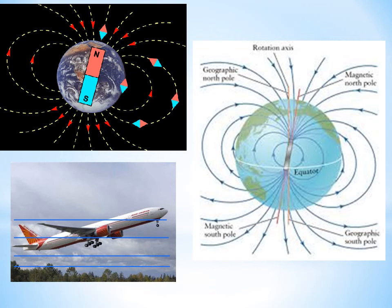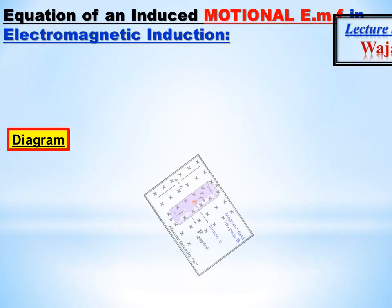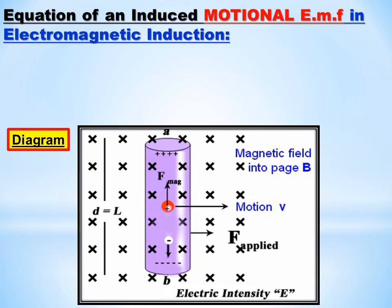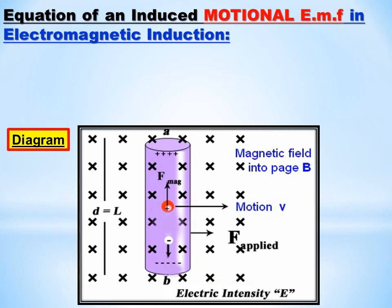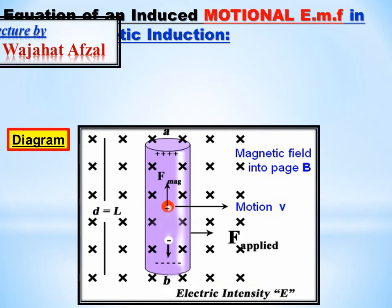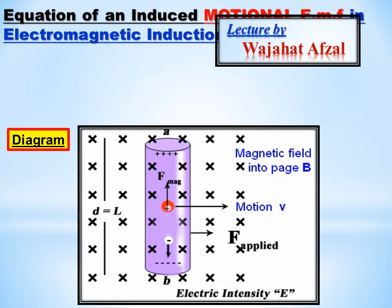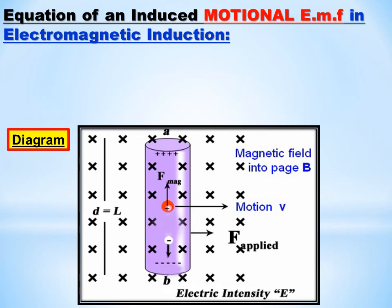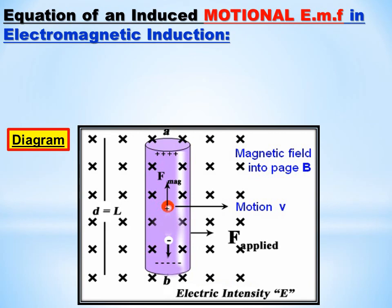When a conductor or wings cut through electric flux, it changes and induces an EMF — this is the equation of induced or motional EMF in electromagnetic induction. In the basic diagram, the cross symbols represent the magnetic field directed into the page. A conductor of length L is placed perpendicular in that magnetic field. If we drag this conductor perpendicularly with velocity V in the direction of applied force, then this conductor will experience a magnetic force, causing positive charges to move upward and negative charges to move downward, accumulating at the ends. This conductor will act as a battery or source.